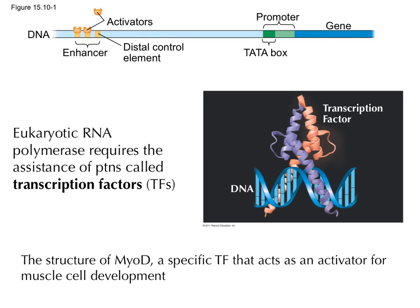Here's a picture of a transcription factor — it's a protein shape. This one is specifically MyOD, which is important for muscle cell development. It binds the DNA, and that promotes RNA polymerase binding, which promotes gene expression. MyOD would only be present in cells that are going to turn into muscle, and that's how you get different cells turning into different cell types in the developing organism.